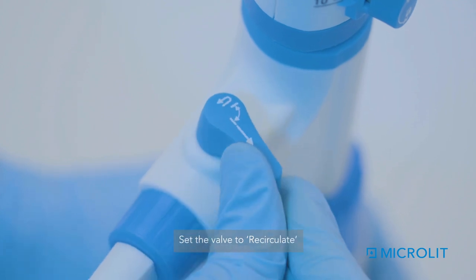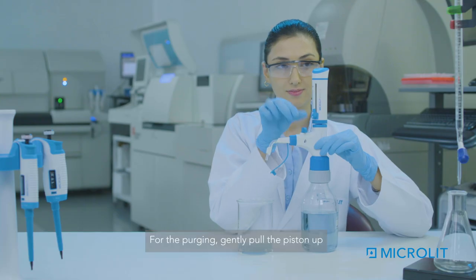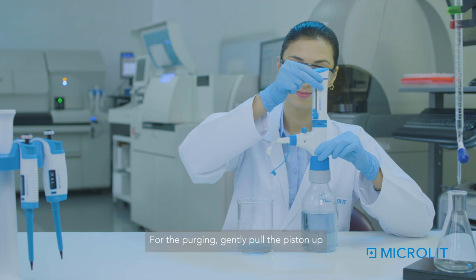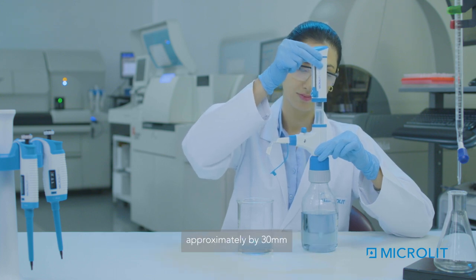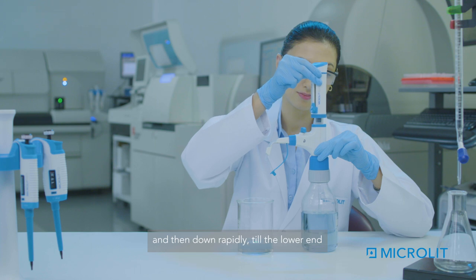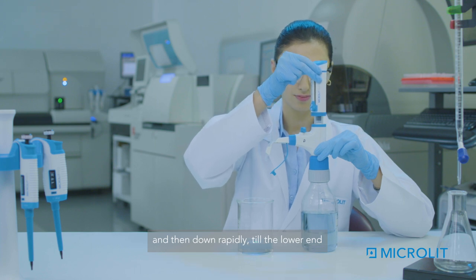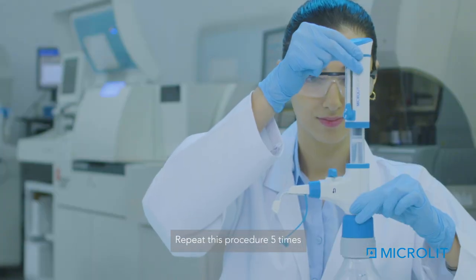Set the valve to recirculate. For the purging, gently pull the piston up approximately by 30mm and then down rapidly till the lower end. Repeat this procedure 5 times.